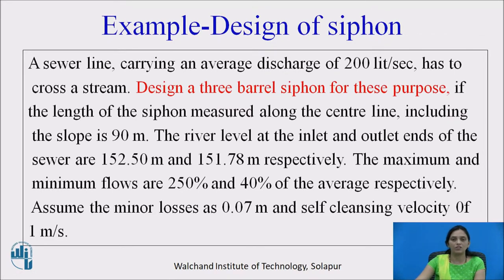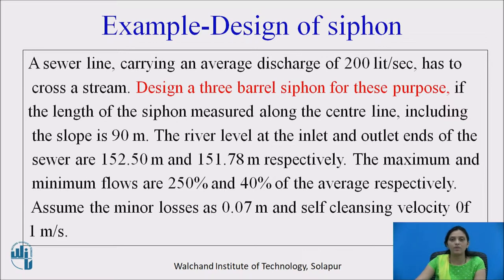Take one example for the design of a siphon. A sewer line carrying an average discharge of 200 liters per second has to cross a stream. Design a three-barrel siphon for this purpose. The length of the siphon measured along the center line including the slope is 90 meters. The river levels at the inlet and outlet ends of the sewer are 152.50 and 151.78 respectively. The maximum and minimum flows are 250% and 40% of the average respectively. Assume minor losses as 0.07 meter and self-cleansing velocity 1 meter per second.